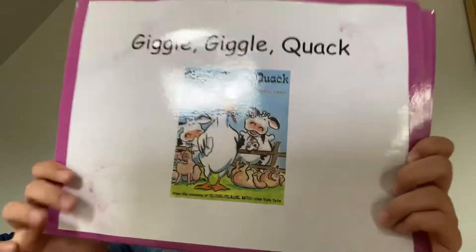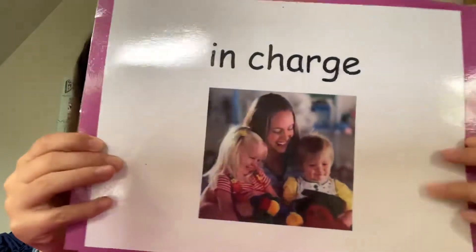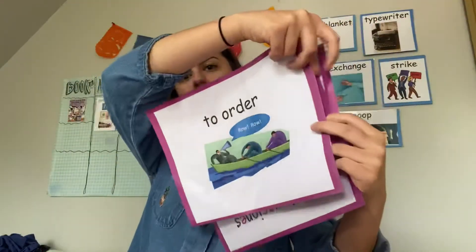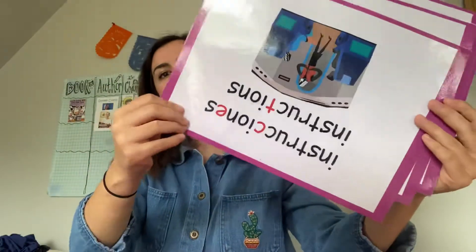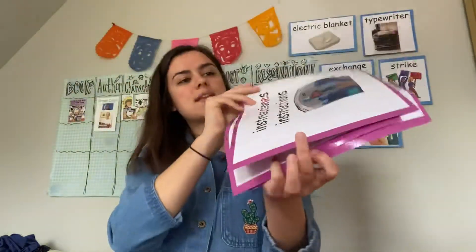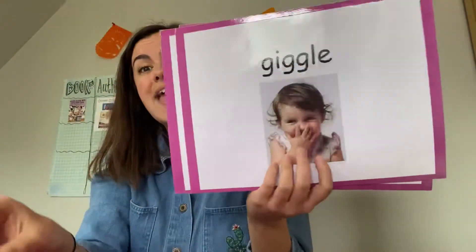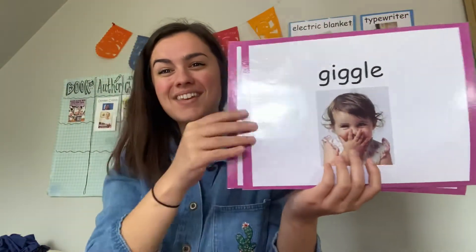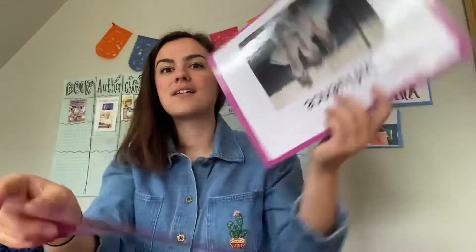So we're going to pass through these words one more time. We're just going to say them really fast and we're done for the day. Say: giggle, giggle, quack. Say: in charge. Say: to order. Oops, upside down — all of these are upside down. Say: instructions. Say: giggle. Say: stare. And say: influence.